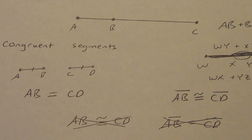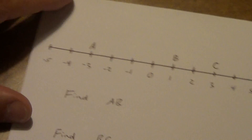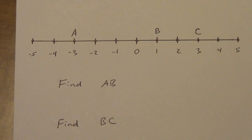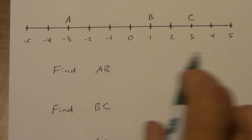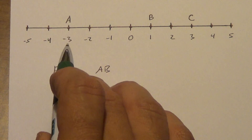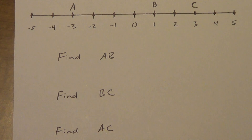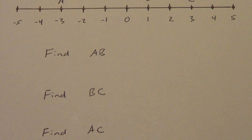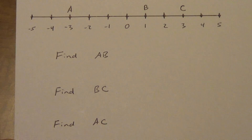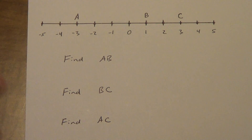That's it for the knowledge part — let's talk application now. Copy the number line down: it goes from negative 5 to positive 5, with A at negative 3, B at 1, and C at 3. We're going to find AB, BC, and AC. Go ahead and pause and copy that down.